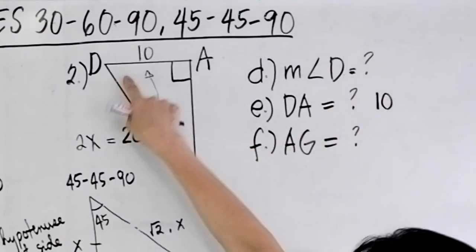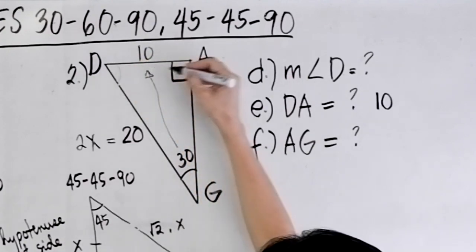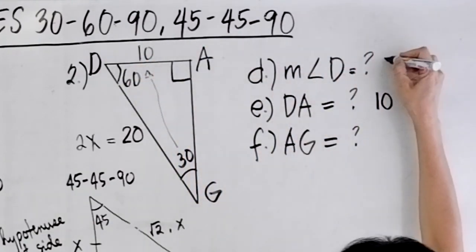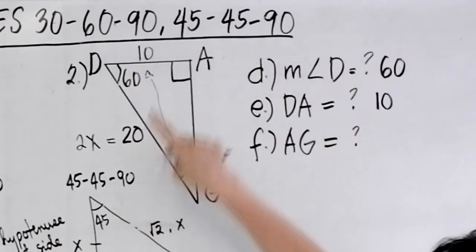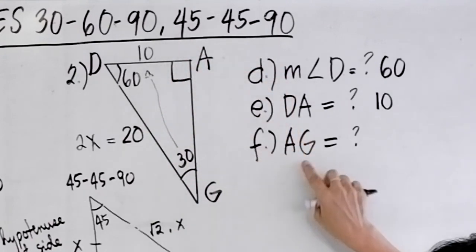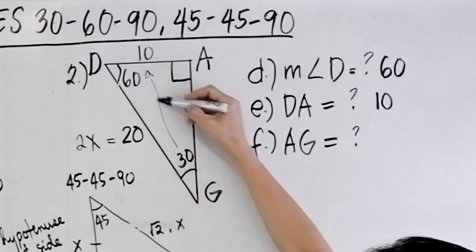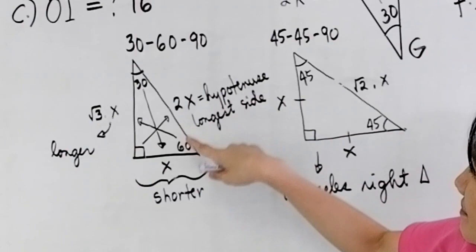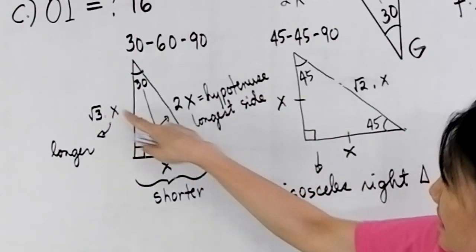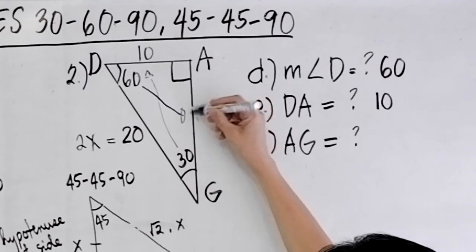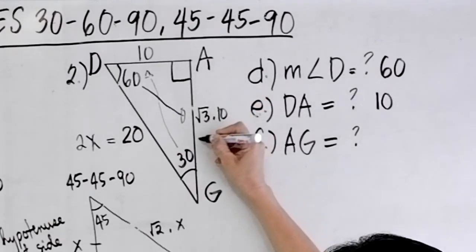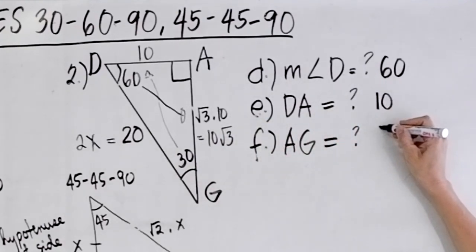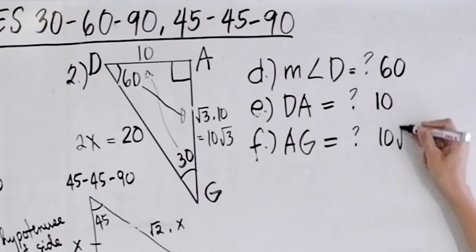What about the measurement of angle D? Obviously this angle is 90 and this is 30, so this must be 60. So we have angle D as 60 degrees. And AG is the side opposite the 60-degree angle. From the 30-60-90 triangle theorem, it is square root of 3 times X, so square root of 3 times 10, or 10 square root of 3. So AG is 10 square root of 3.